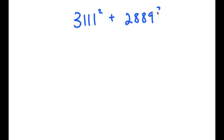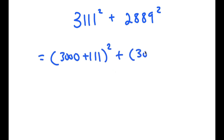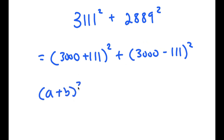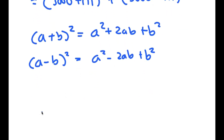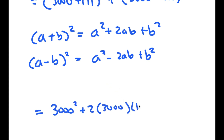In this video, I'm going to solve the problem 3,111 squared plus 2,889 squared. To solve this, I'm going to rewrite this as 3,000 plus 111, all squared, plus 3,000 minus 111, all squared. If I have something in the form a plus b squared, this equals a squared plus 2ab plus b squared. And if I have a minus b squared, this equals a squared minus 2ab plus b squared. So 3,000 plus 111 squared equals 3,000 squared plus 2 times 3,000 times 111 plus 111 squared.